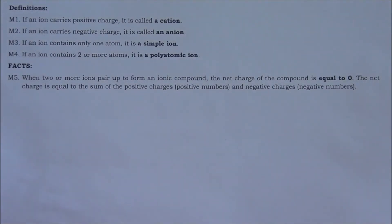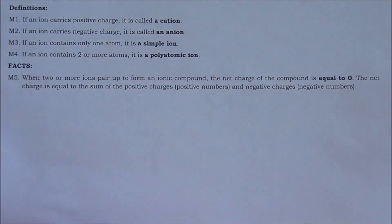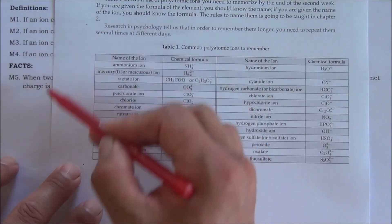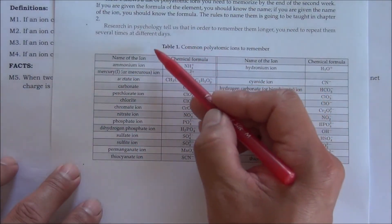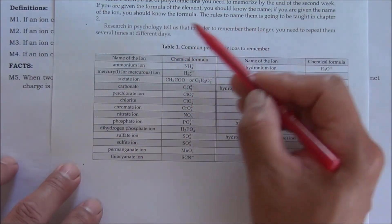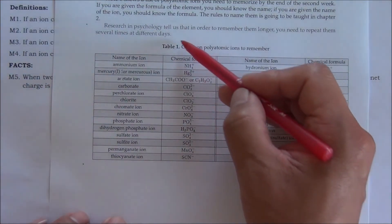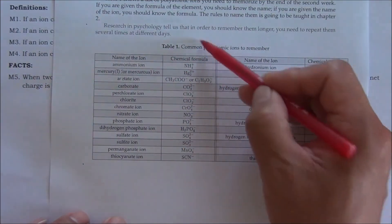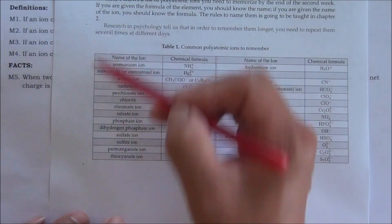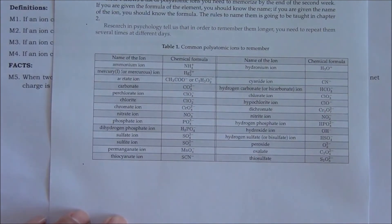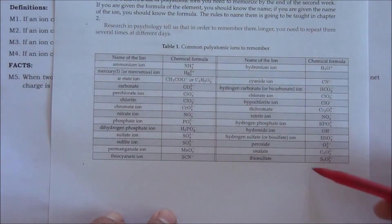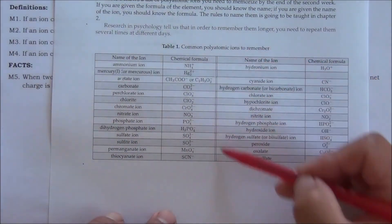The best way to recognize polyatomic ions is to remember a list of the most common ones. You should remember both the chemical formulas and the names of the polyatomic ions.